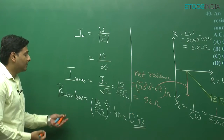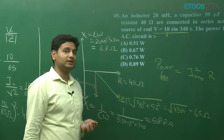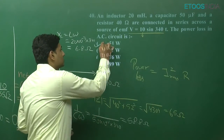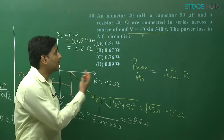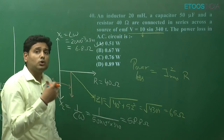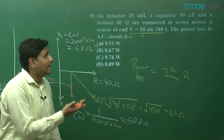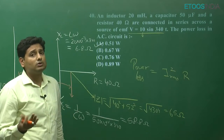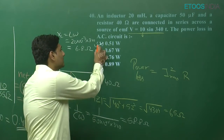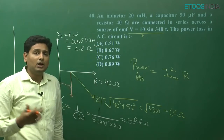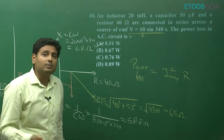If we look at the options, 0.43 is not mentioned in any option. But the nearest option is 0.51, which we can take. The exact option is not coming because in the equation, omega might have been something other than 340, or the inductor or capacitance values could differ slightly. So our approximate answer is 0.51, and option A will be correct for question number 40.